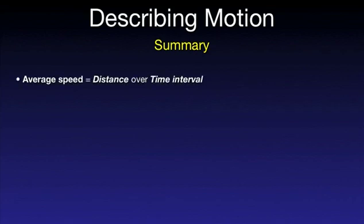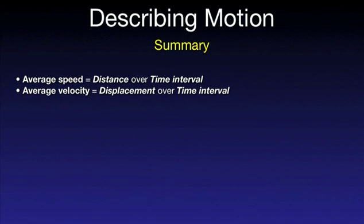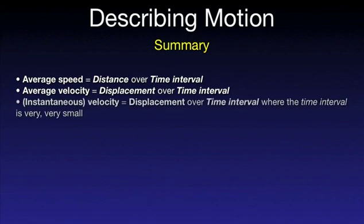Let's now summarize the topics covered today. The average speed is the distance over the time interval. The average velocity is displacement over time interval. The instantaneous velocity, or simply velocity, is the displacement over time interval where the time interval is very, very small.